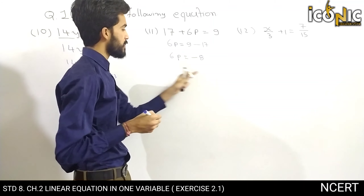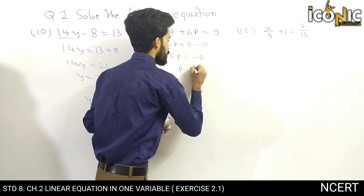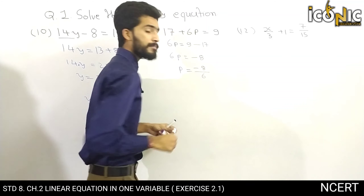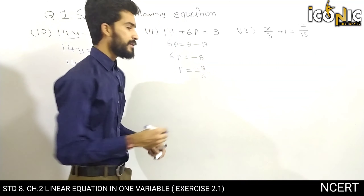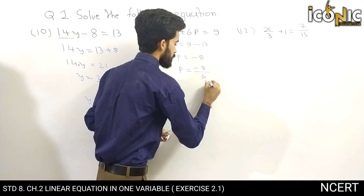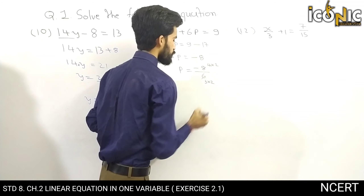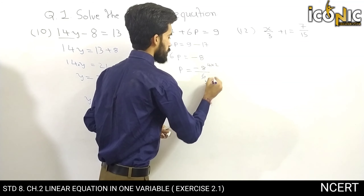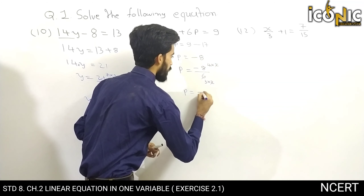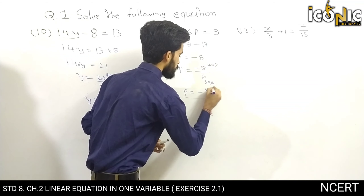Since 6 is in multiplication with p, it goes to division: p is equal to minus 8 divided by 6. Simplifying — both divisible by 2 — gives p is equal to minus 4 by 3. This is our answer.